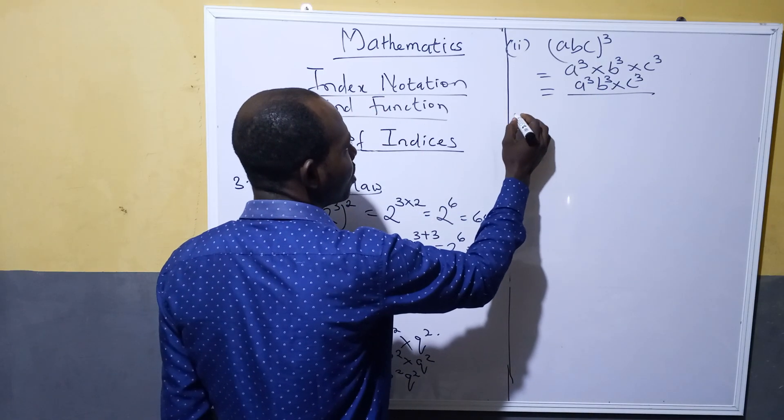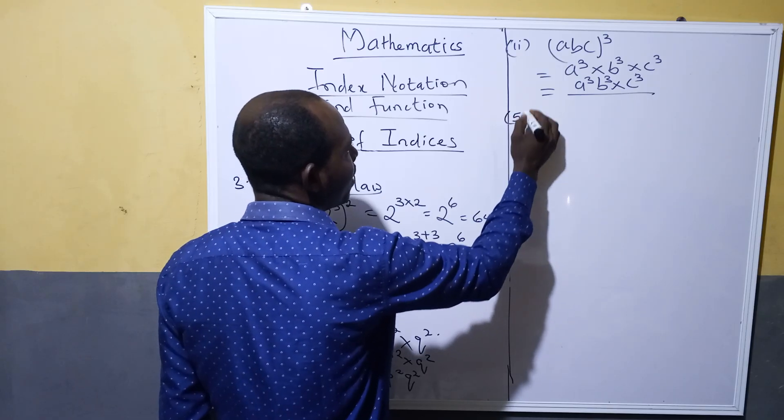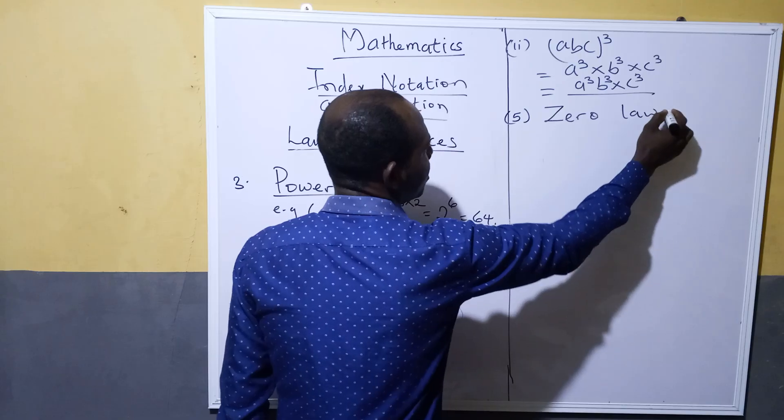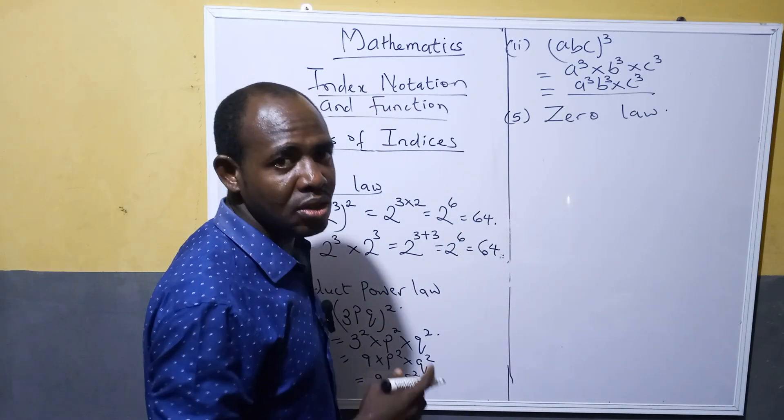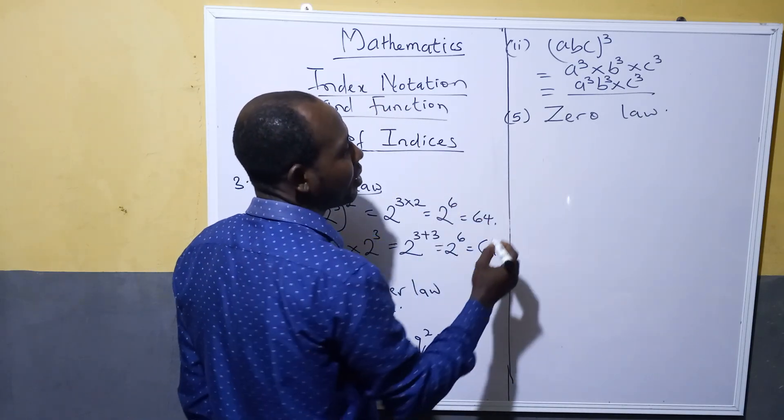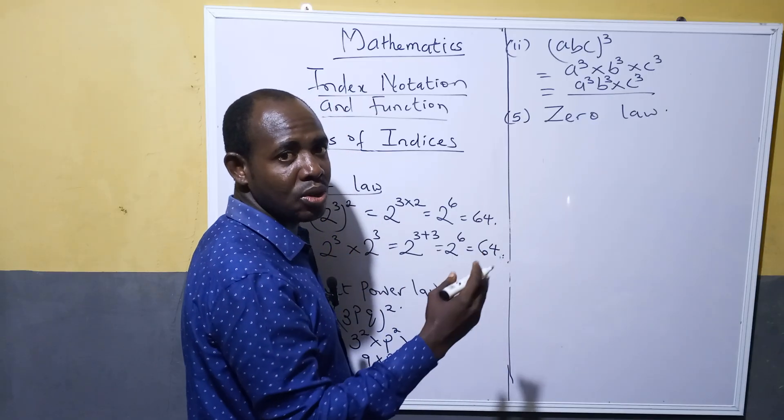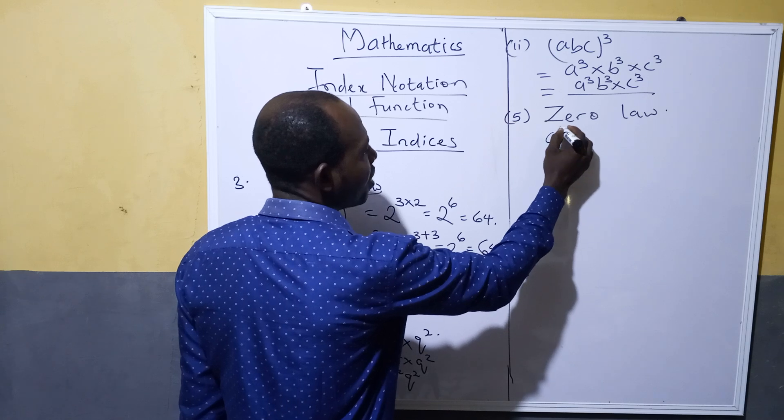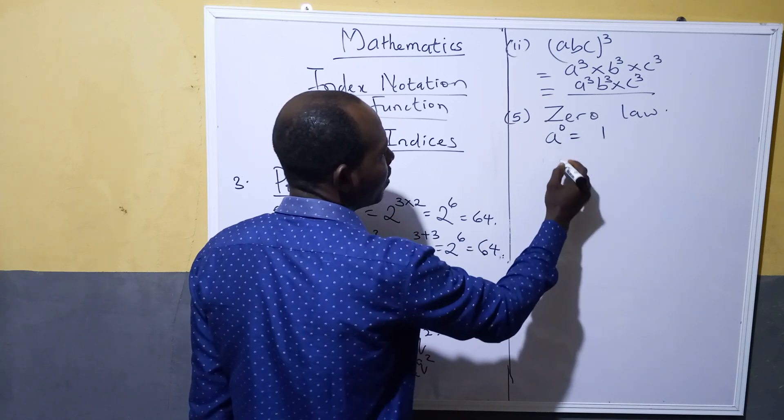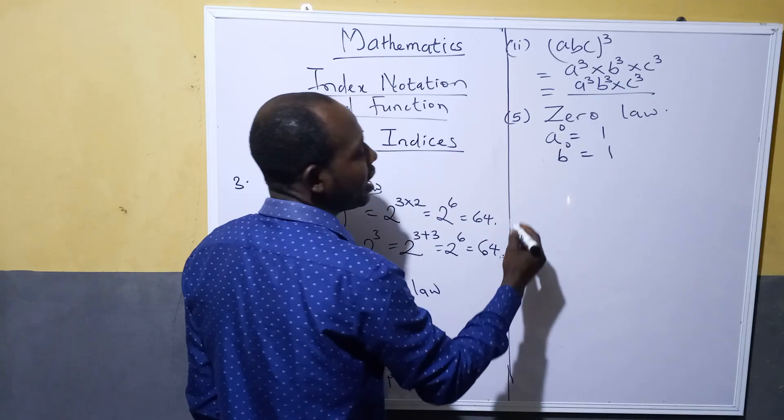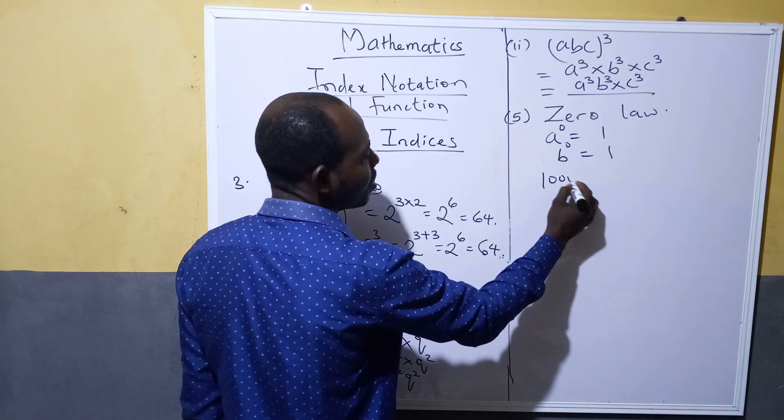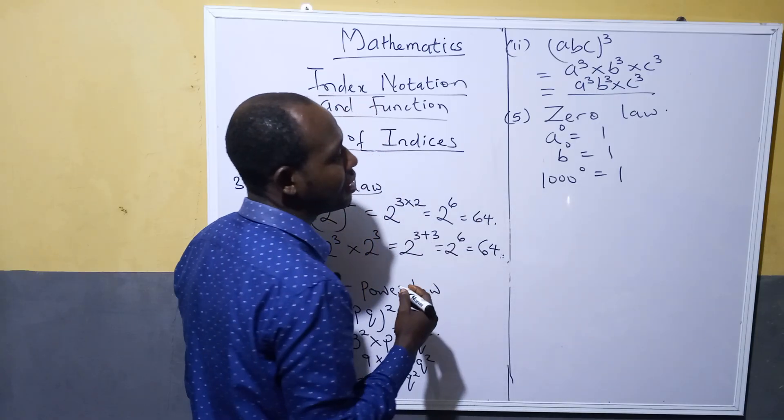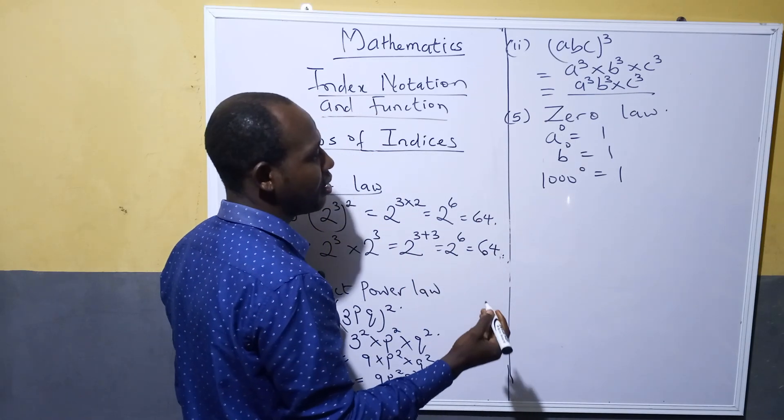Then the next one we are going to look at is number five, called zero law. Zero law simply states that anything, whatever it is, to the power of zero equals one. That is a raised to power zero equals one, b raised to power zero equals one, even one thousand raised to power zero equals one.